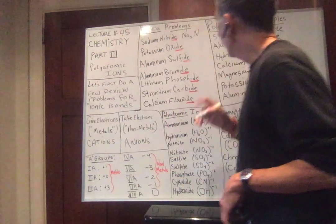Finally, calcium fluoride. Calcium, again group 2A — Ca wants to give up two electrons. Fluorine is in group 7, needs one electron. So calcium gives two electrons; fluorine only needs one. You need two fluorines to take those two electrons, because each fluorine only takes one electron. The formula is CaF₂.